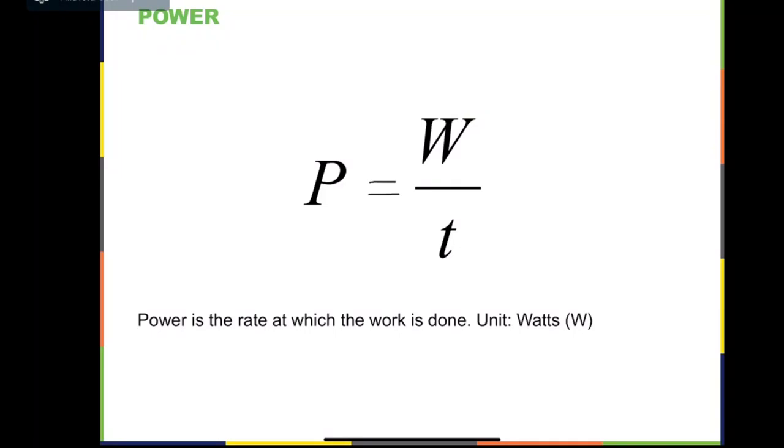The quantity that describes how fast work can be done is named power. In physics, power is defined as the ratio of the amount of work to the time period in which the work is done.